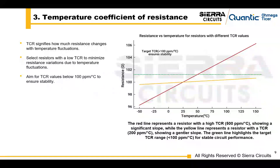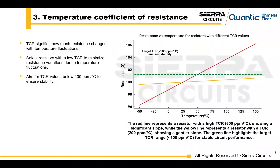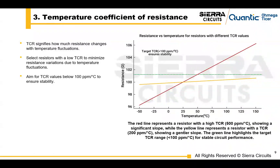Another important factor is the temperature coefficient of resistance. The TCR indicates how much the resistance value changes with temperature fluctuations, and it's measured in parts per million per degree Celsius. You want to aim for TCR values below 100 parts per million per degree Celsius.